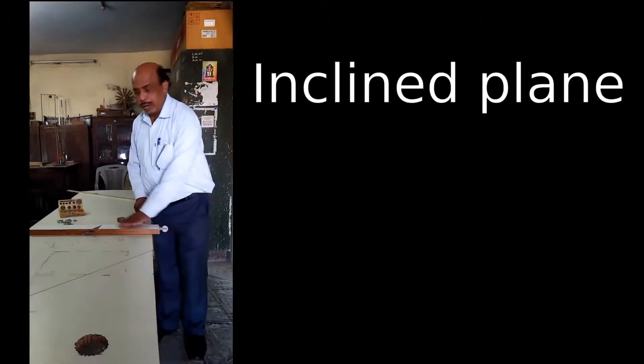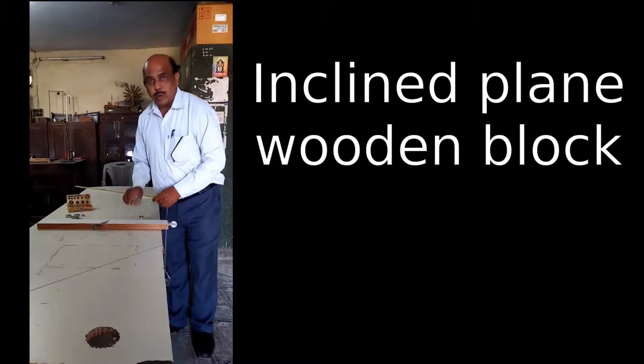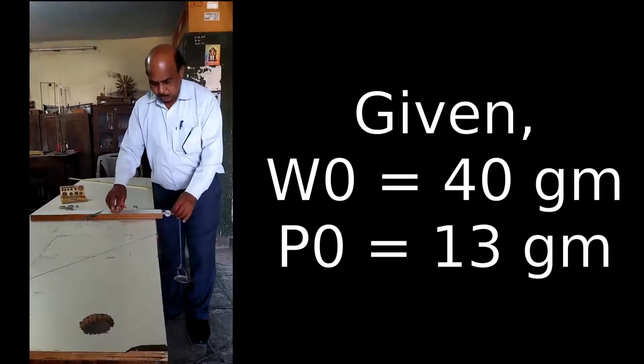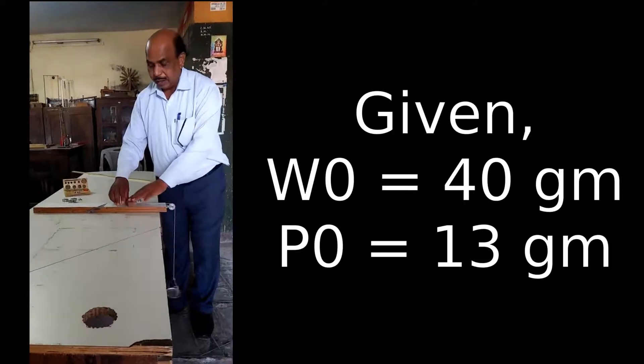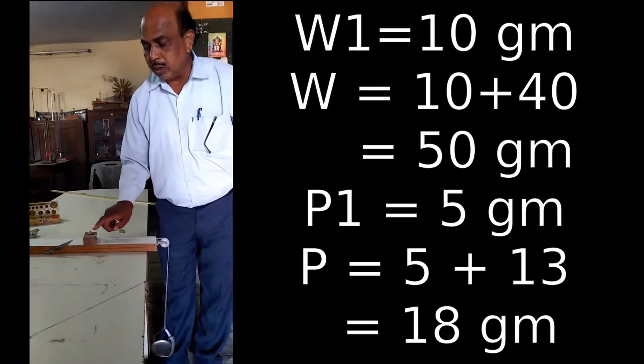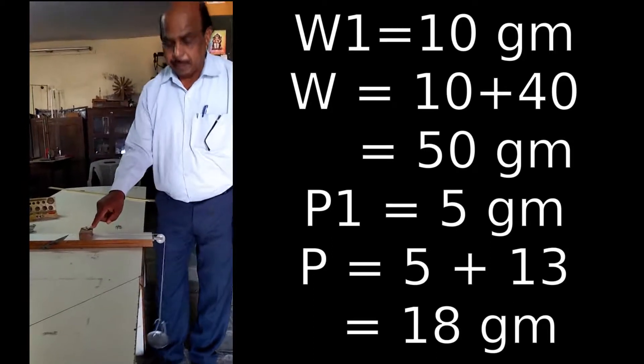This is the incline plane, this is the empty wooden block, this is the empty pan. We take the first reading. The empty wooden block weighs 10 grams.